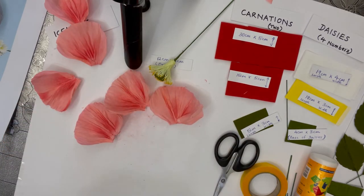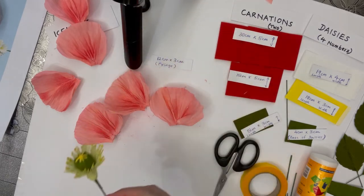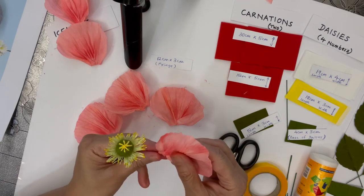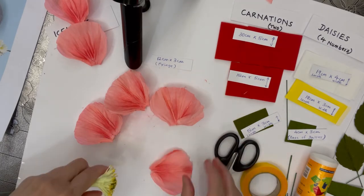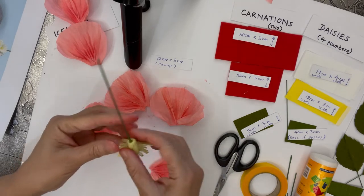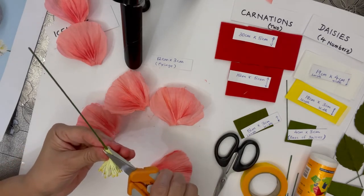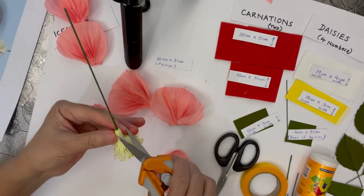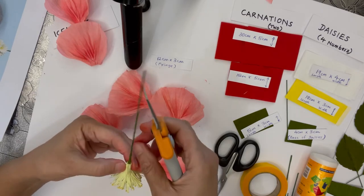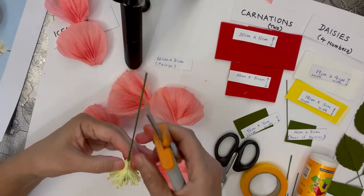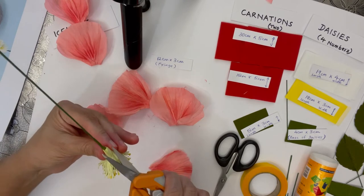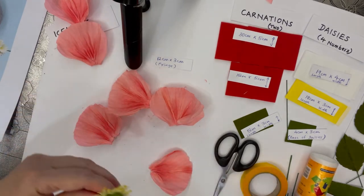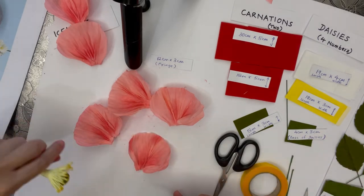Once you're done with all six petals, you can start gluing them. Normally I like to allow them to dry, but we don't have much time so let's continue. I will try and make this thinner. Once I make it a bit thin, I can start gluing the small petals first.